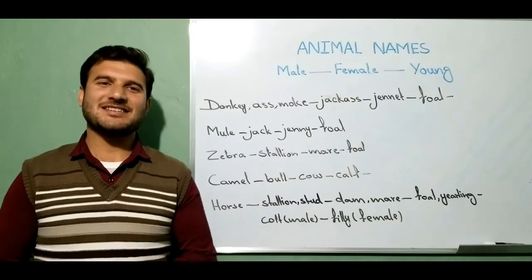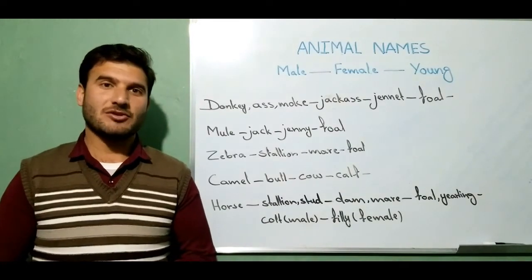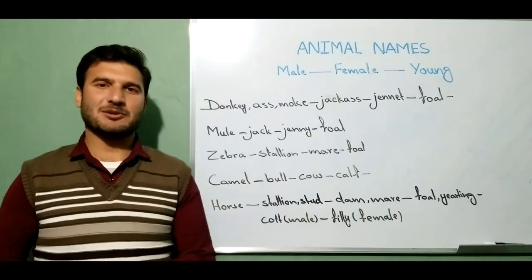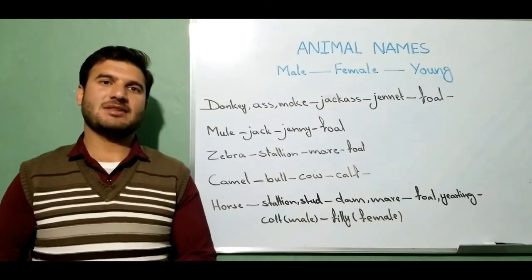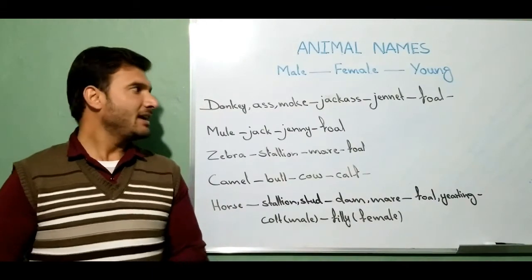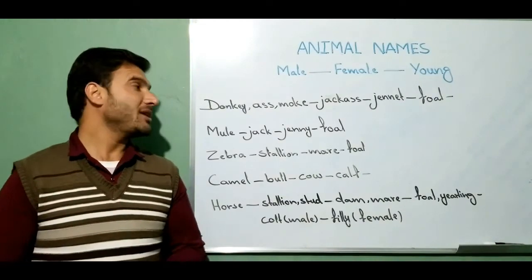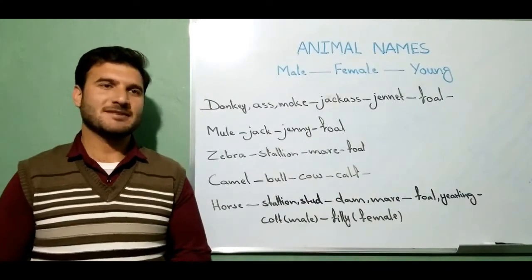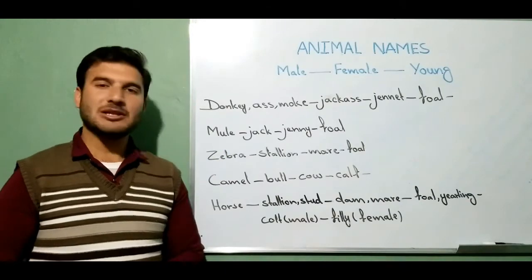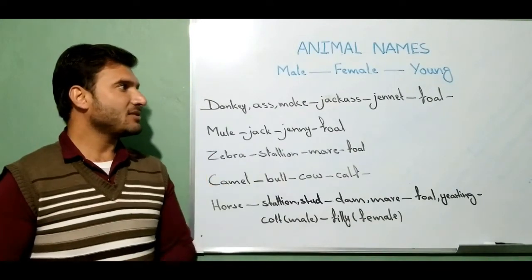Hello viewers, welcome back. This is JK and today I'm back with another animal vocabulary video. As you remember, we talked about 10 animals and their male, female, and young names. I've come up with five more animals today — animals mostly used for transportation purposes: donkey, mule, zebra, camel, and horse.